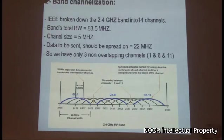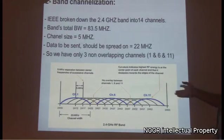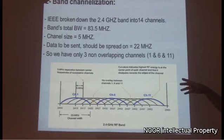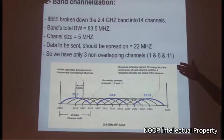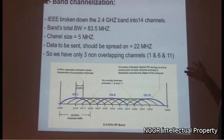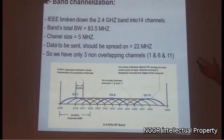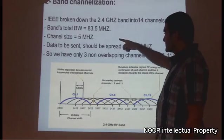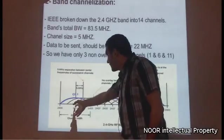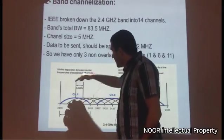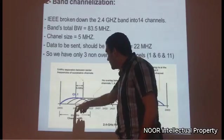Regarding band channelization: the total bandwidth of the 2.4 GHz band is 83.5 MHz. The IEEE standard divides this band into 14 channels, where each channel has a channel spacing of 5 MHz — meaning 5 MHz is the center-frequency separation between adjacent channels.